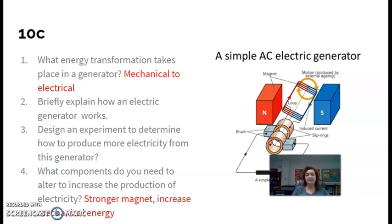So let's go ahead and answer our questions about a generator. What energy transformation takes place in a generator? Well, it's mechanical energy going to electrical energy, right? So we have that motion and it's turning it into electricity. It's the whole point of a generator is to generate electricity. Briefly explain how it works. I just did.